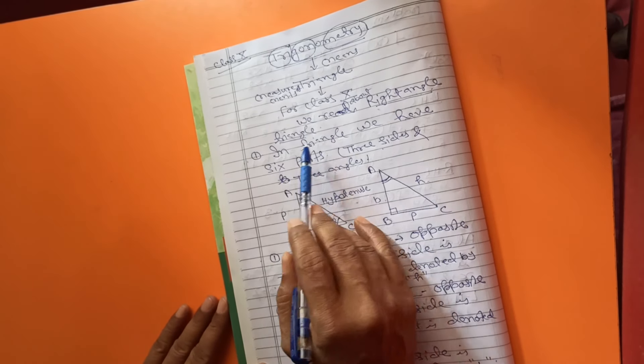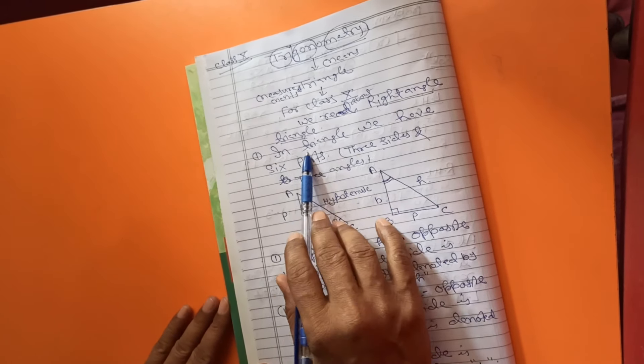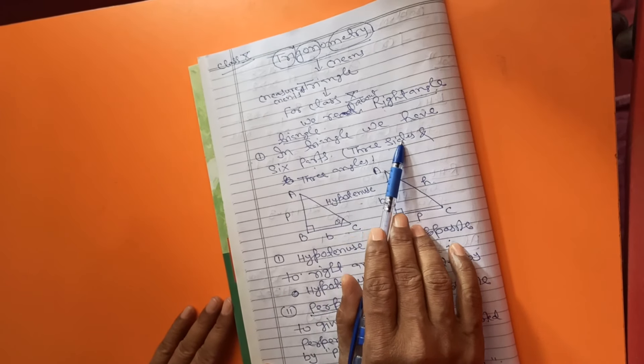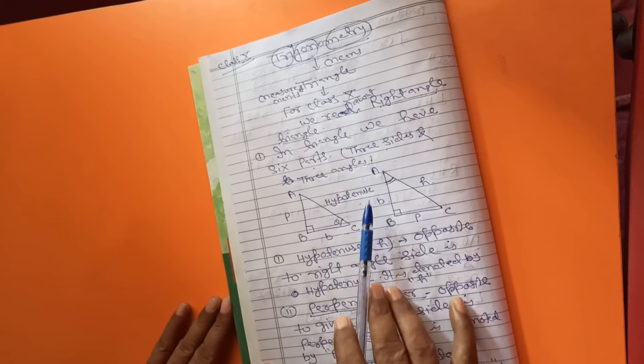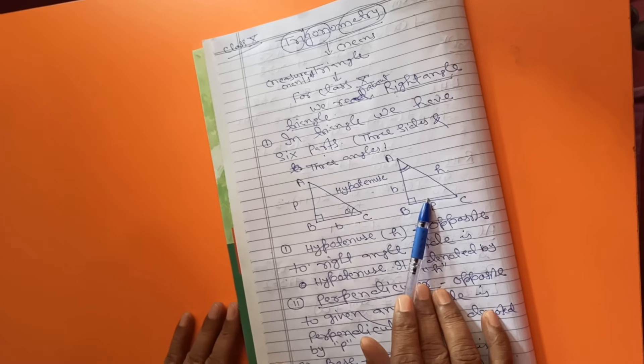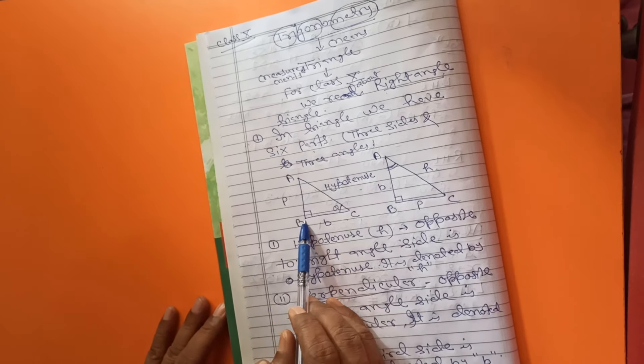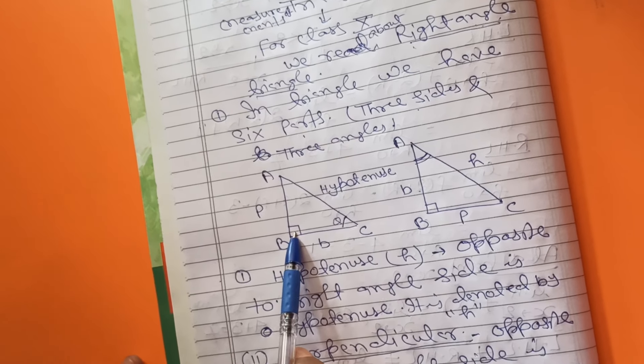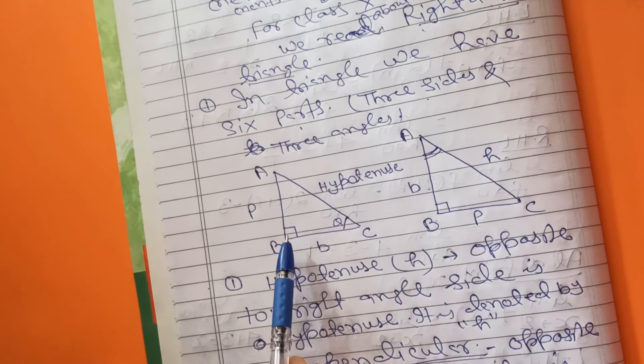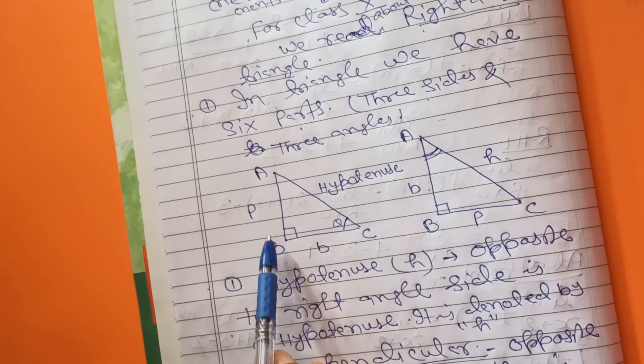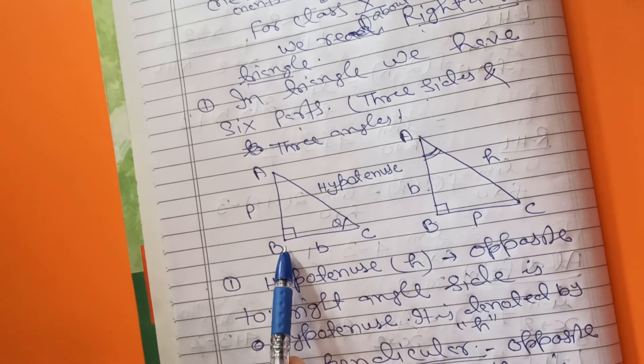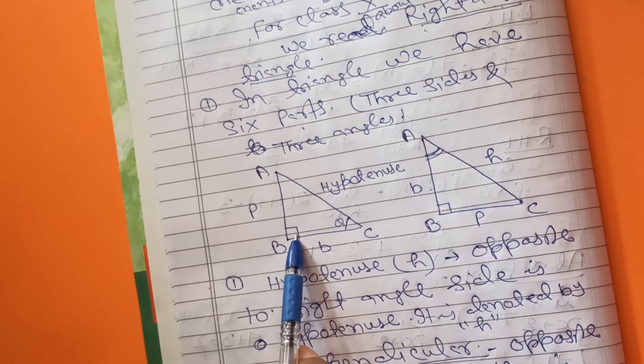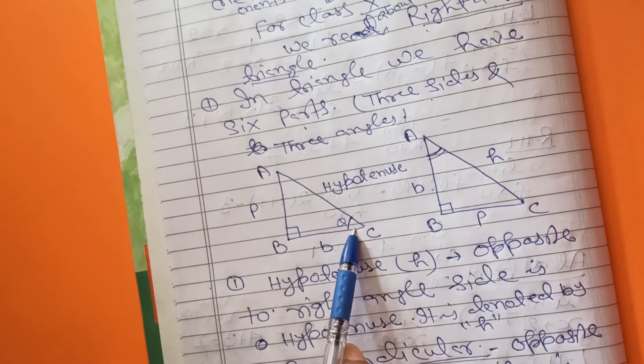In previous class, we know that in triangle, you have six parts, three sides and three angles. Look at these two pictures. In right angle triangle, one angle must be right angle. Then this is called right angle triangle. ABC is a right angle triangle. Angle B is right angle. And other two angles are acute angle.